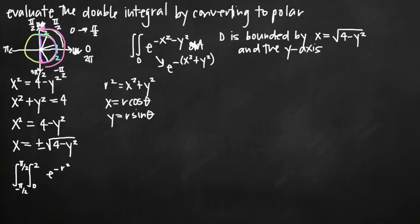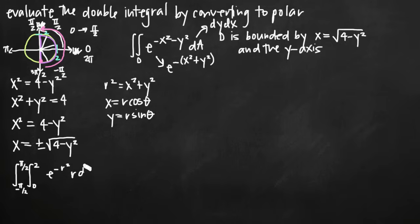Now all we need to deal with is the dA. Whenever you're replacing dA — which can also be written dy dx — you replace it with r dr dθ. That's always the case: replace dA or dy dx with r dr dθ, and make sure to include this extra r. And that's all we need to do to set up our polar double integral. At this point we just need to evaluate it.